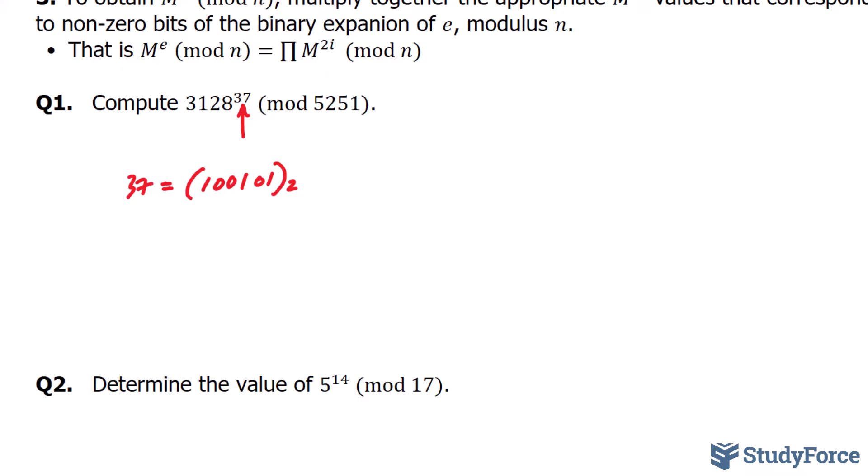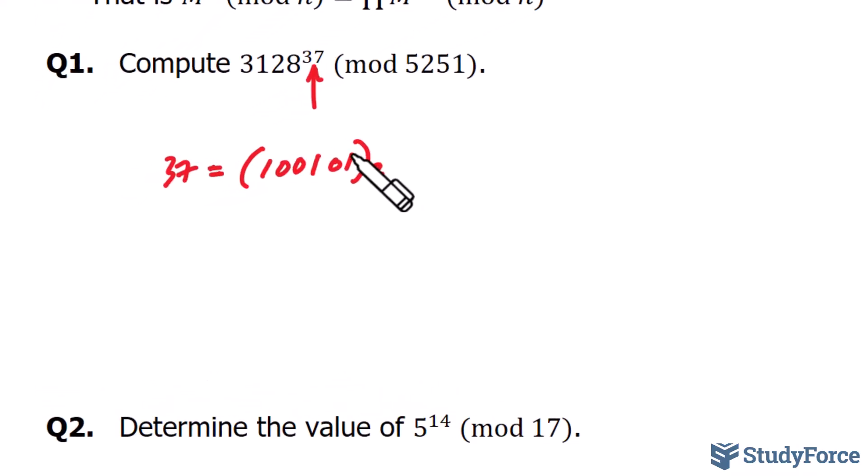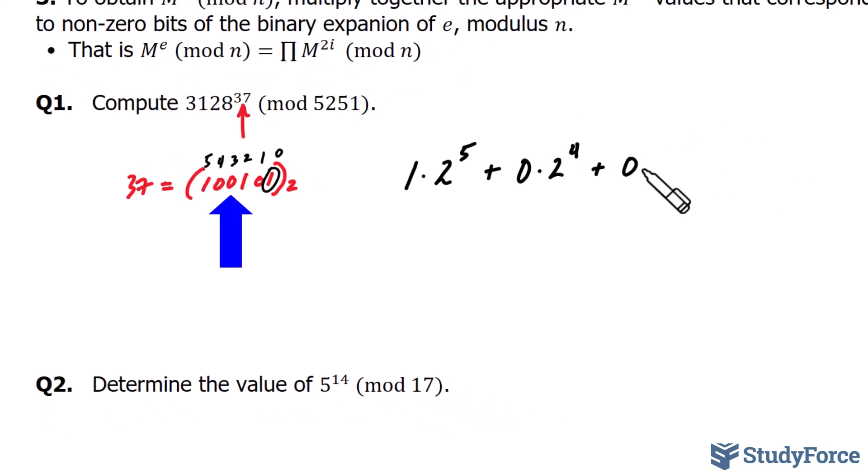Now, the binary expansion of this is very simple. Take a look. We have 1, 2, 3, 4, 5, 6 bits. The rightmost bit is position 0, followed by position 1, 2, 3, 4, and 5. So the binary expansion of this is 1 times 2^5 plus 0 times 2^4 plus 0 times 2^3. Notice that each bit represents the leading factor in these terms. And because this number is in binary, we have a power with the base of 2 raised to the exponent depicting its position in the number.